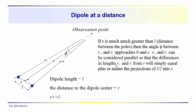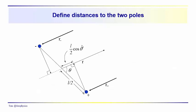Since the lines are practically parallel, the differences in the lengths R-plus and R-minus will simply be plus or minus the projections of L/2 onto R. So R-minus equals R plus L/2 times the cosine of theta to the negative pole, and R-plus equals R minus L/2 times the cosine of theta to the positive pole — we're just adding or subtracting this side of the right triangle.